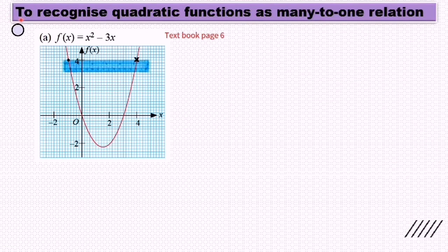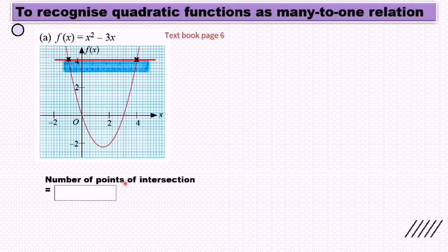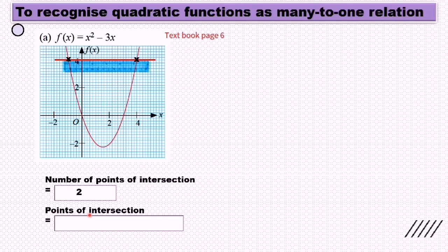Now we are going to learn how to recognize quadratic functions as many-to-one relations. We look at this function f(x) = x² - 3x. If I put a ruler here and draw a line, the number of points of intersection is 2. The points of intersection are (-1, 4) and (4, 4).